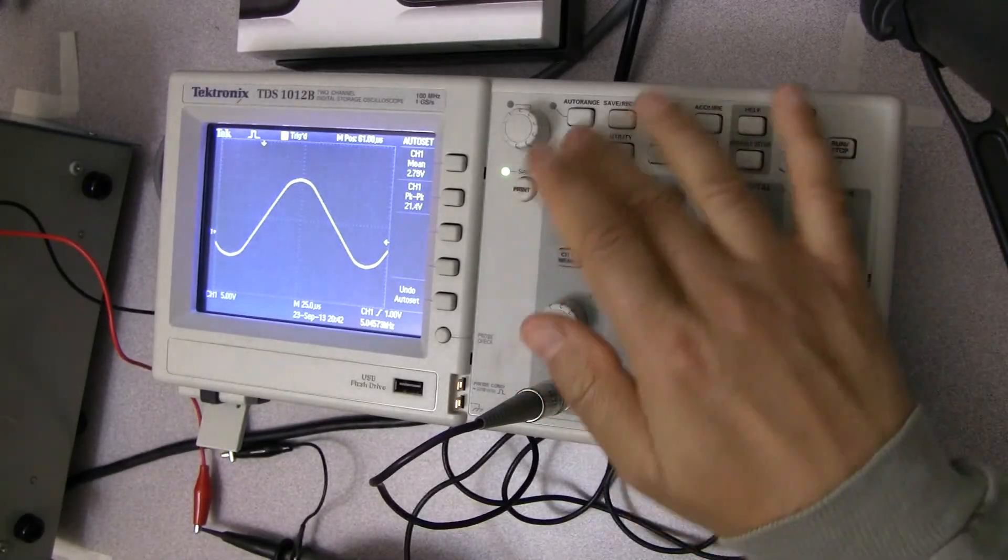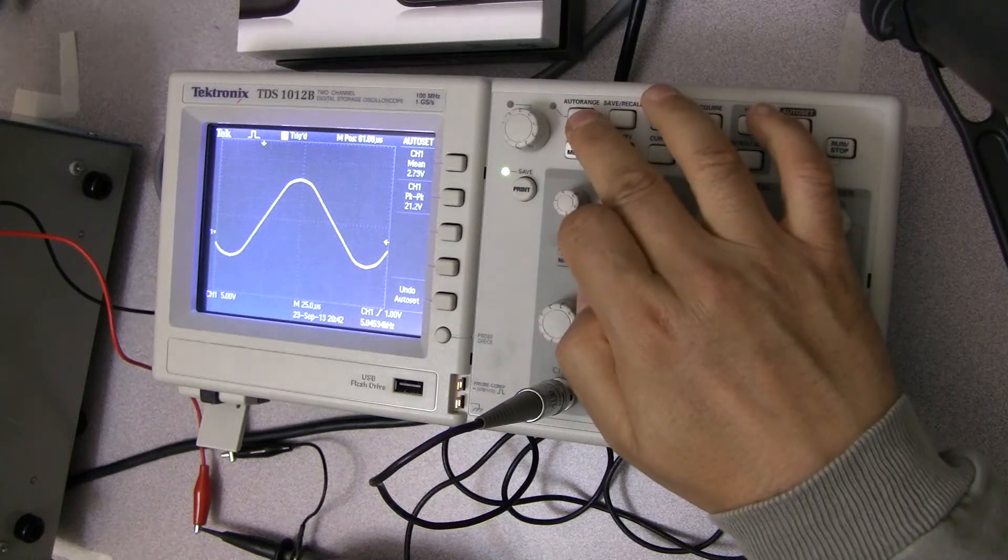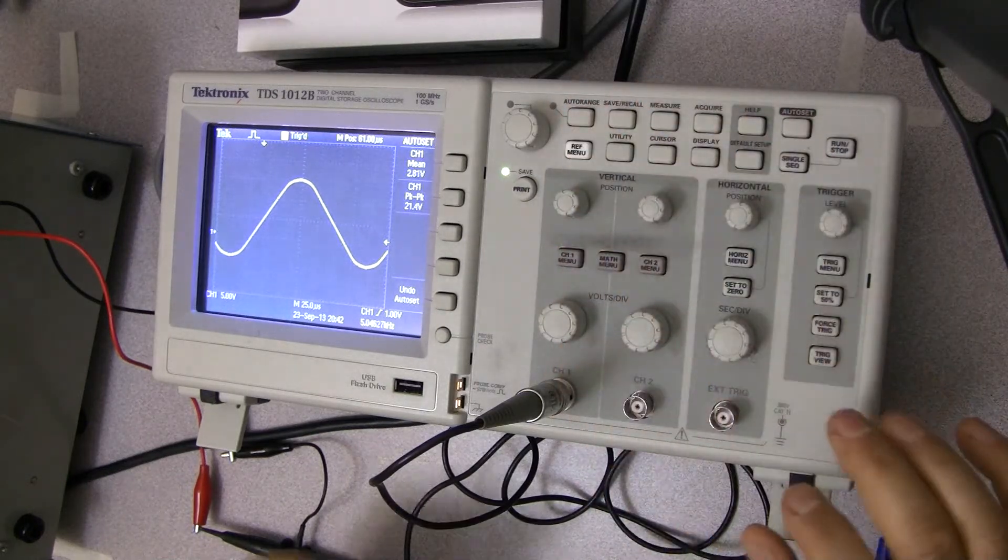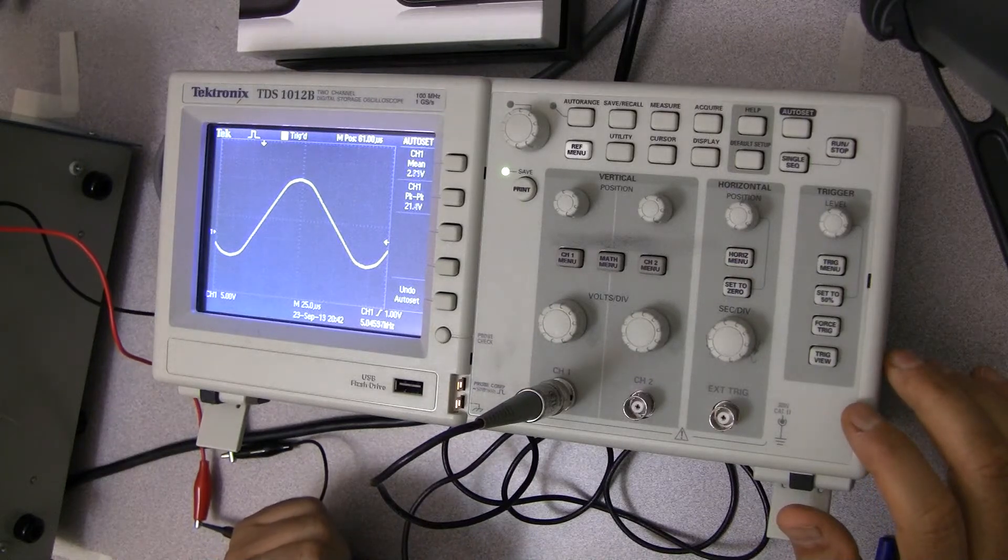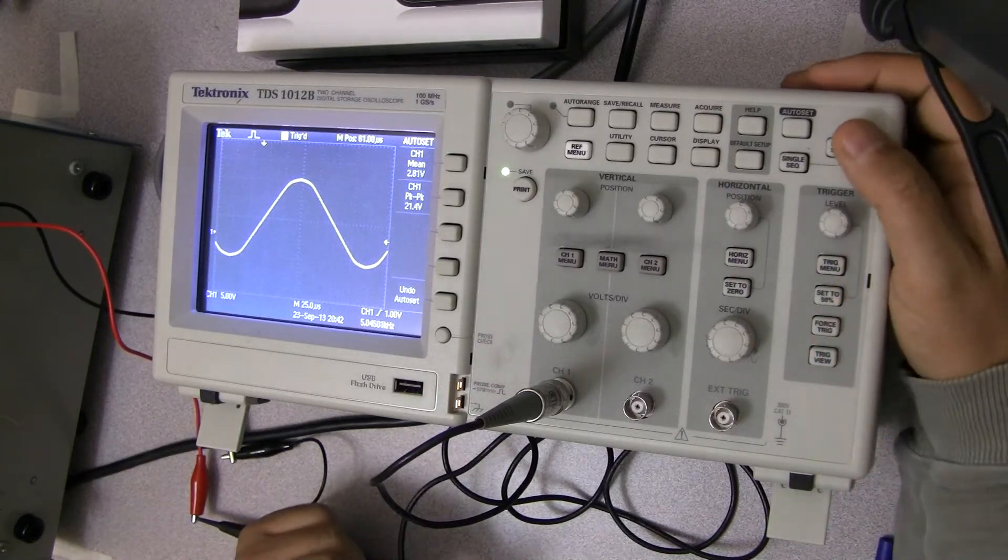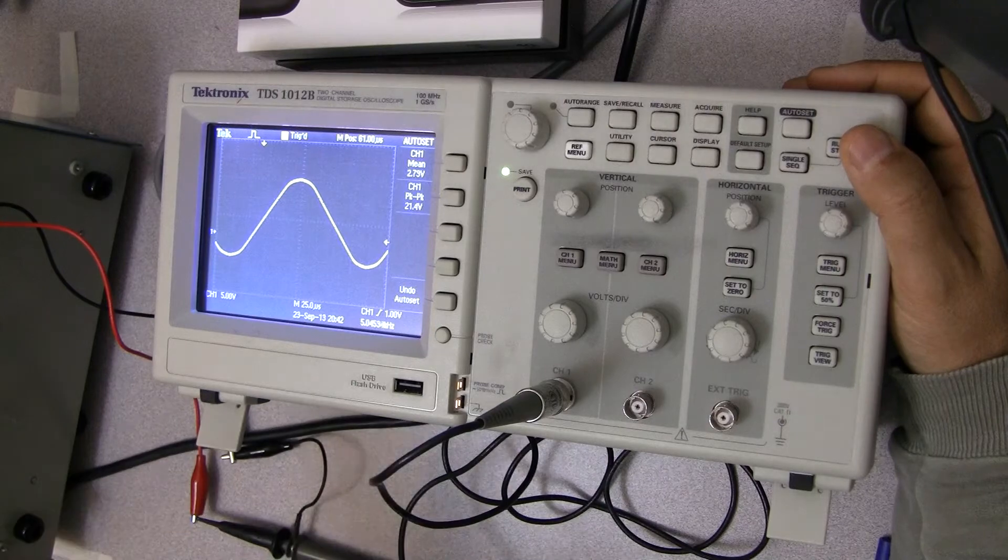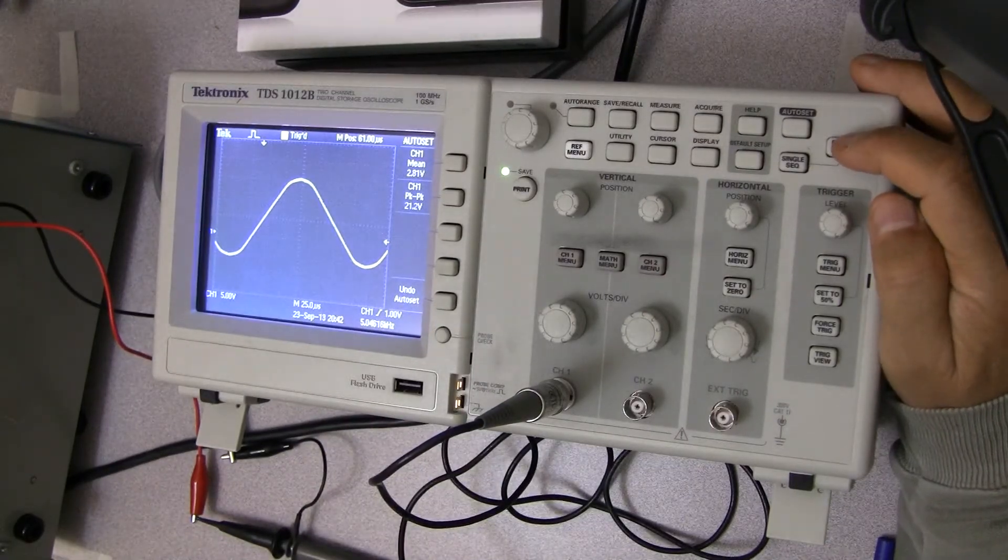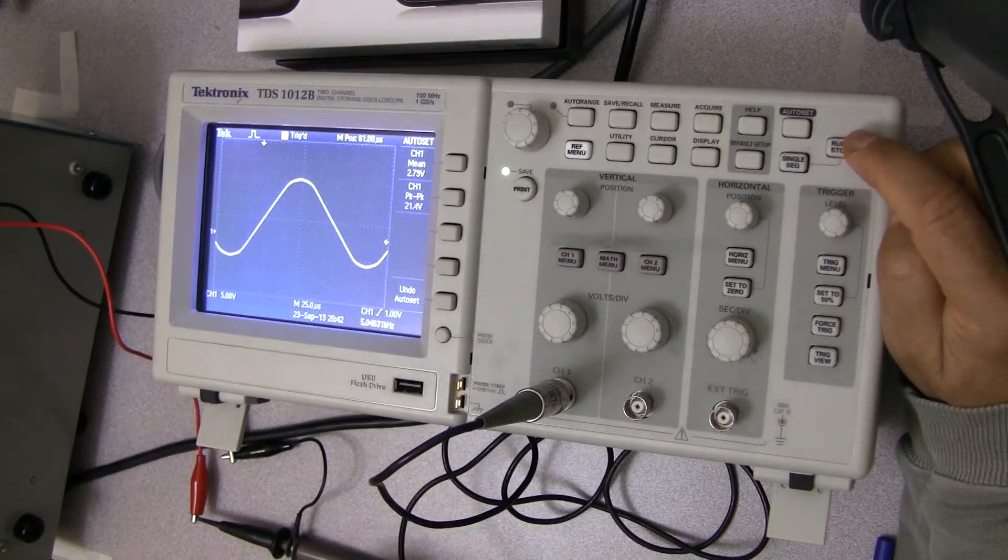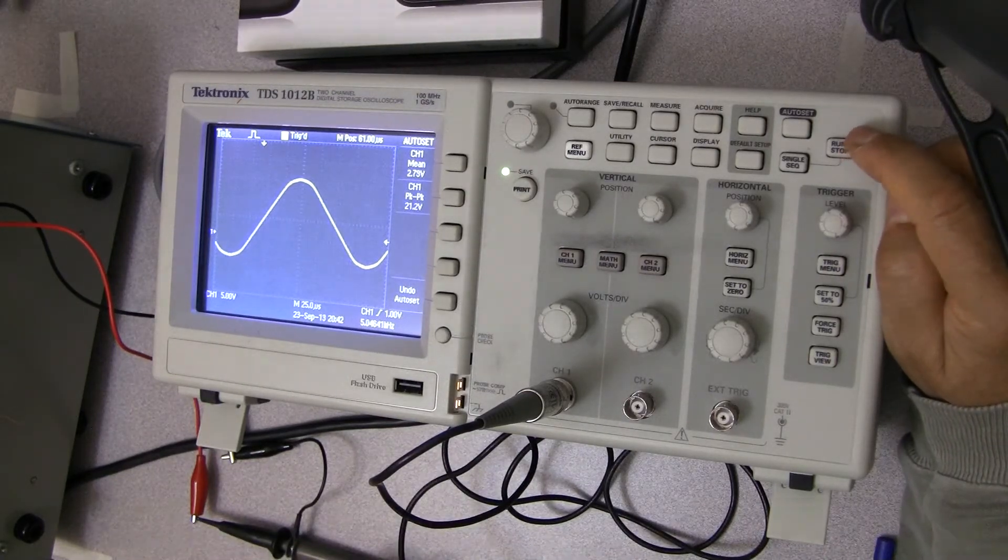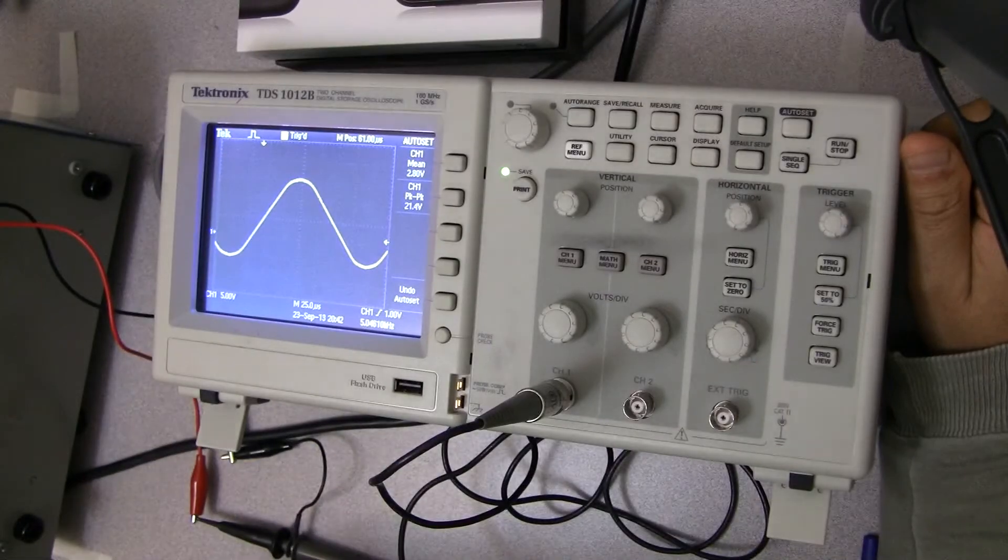Auto range basically, once you press it, keeps tracking your signal and readjusting your scope to make sure you get it. Now, once in a while you get a signal that is not periodic but it goes away and you just want to stop and look at it. This run-stop allows you to just catch one and look at it. So those are pretty much the key features of this instrument.